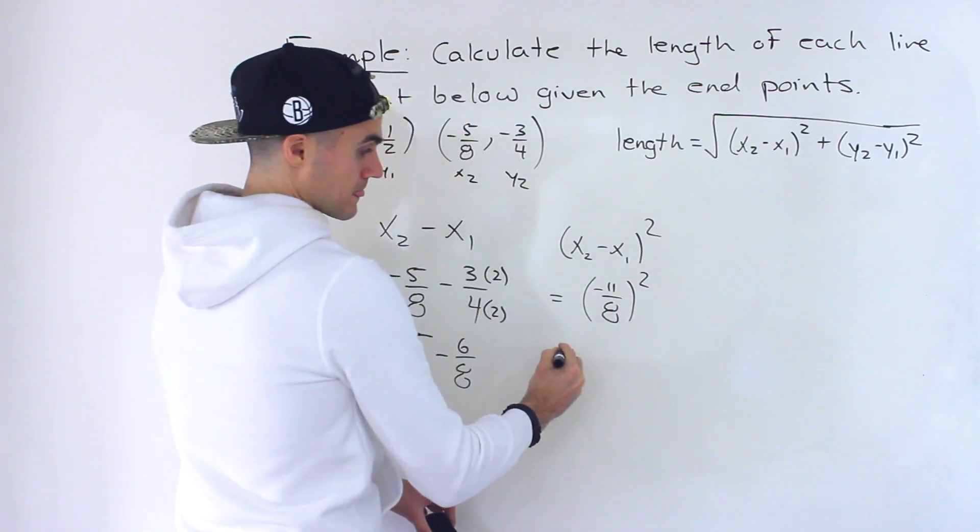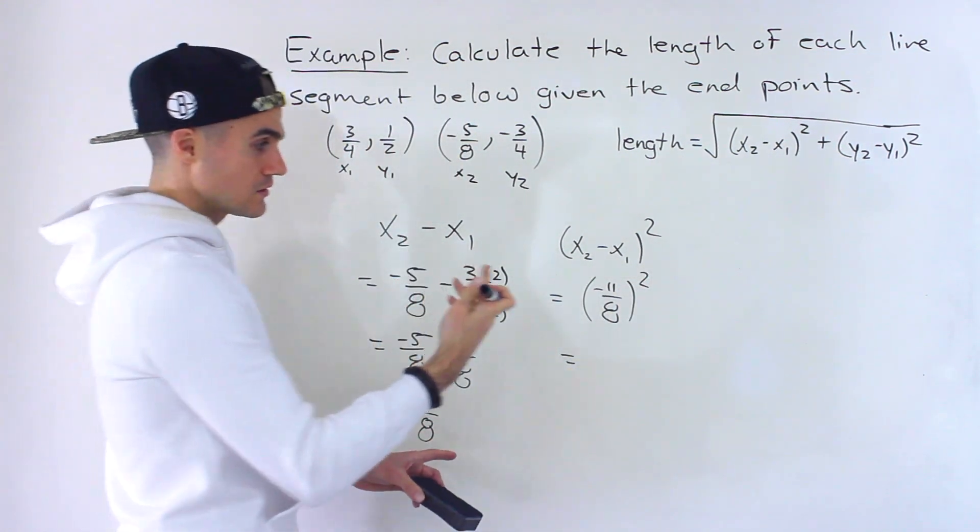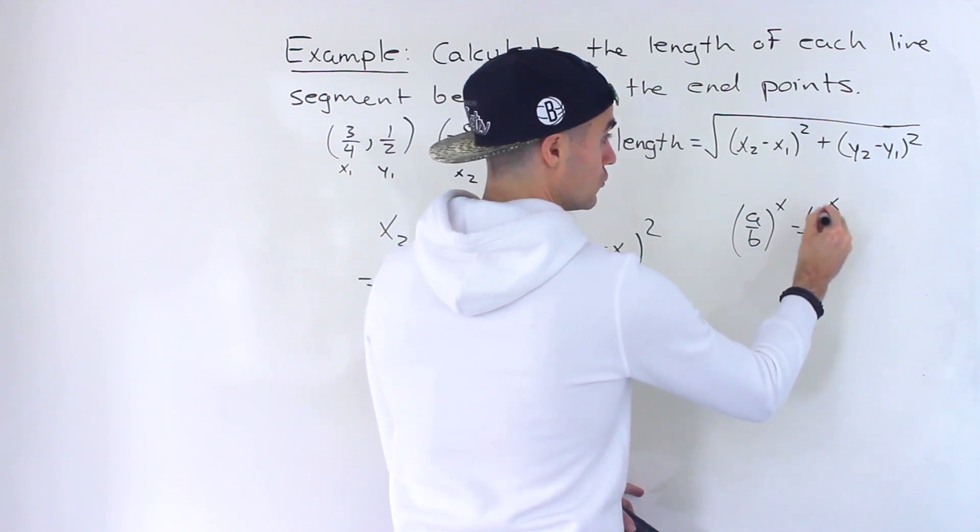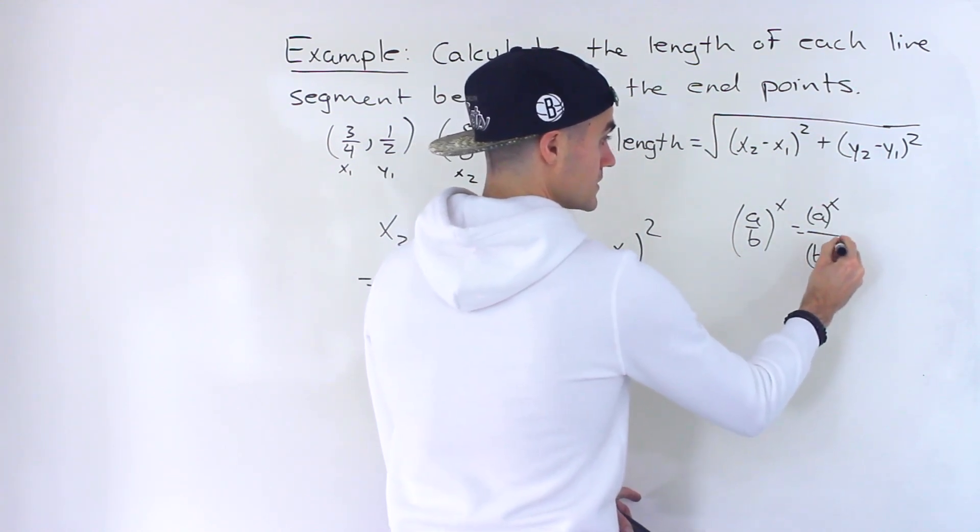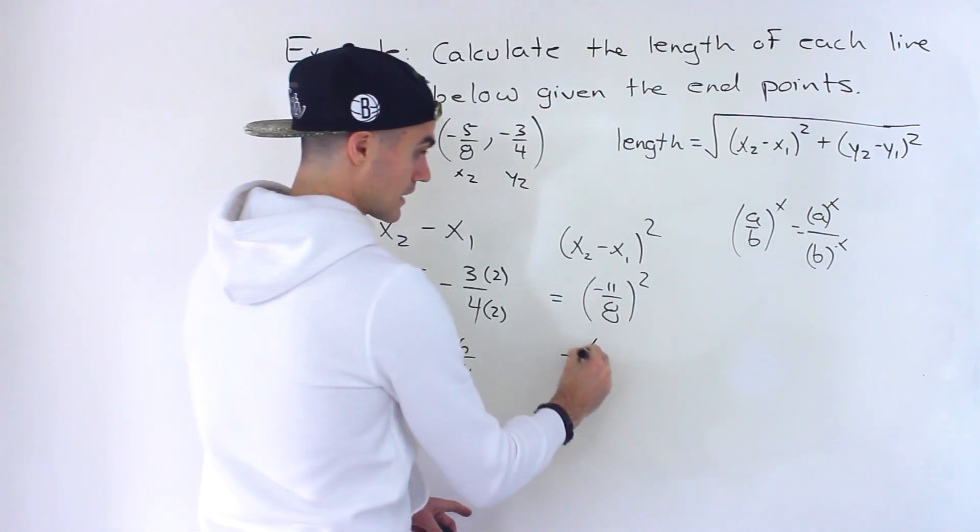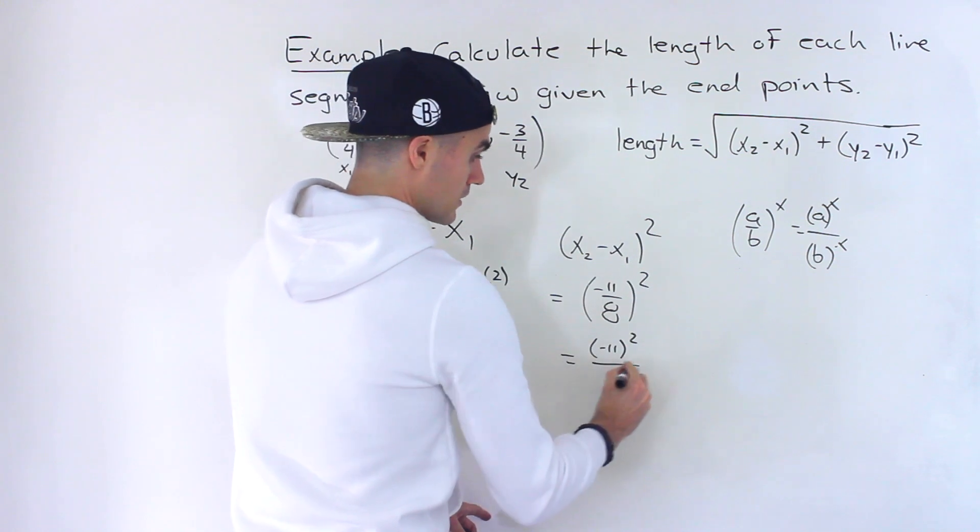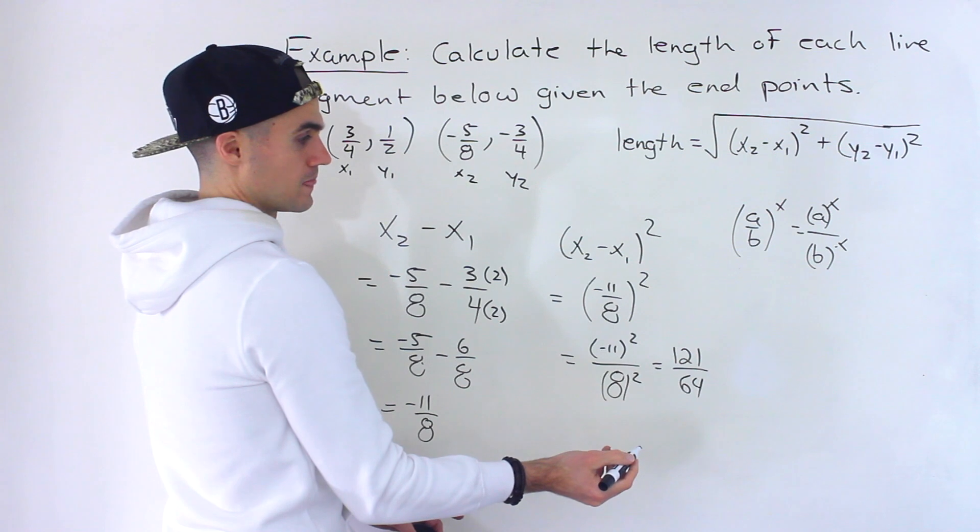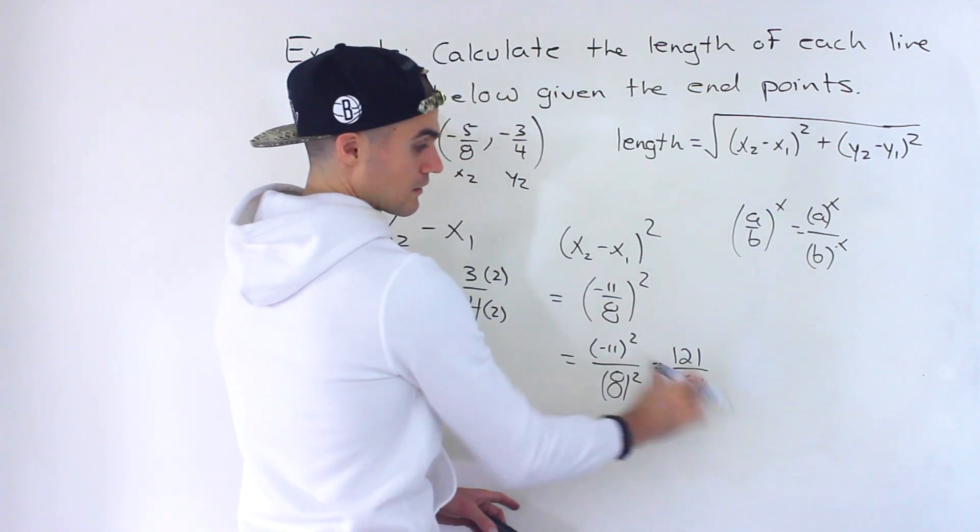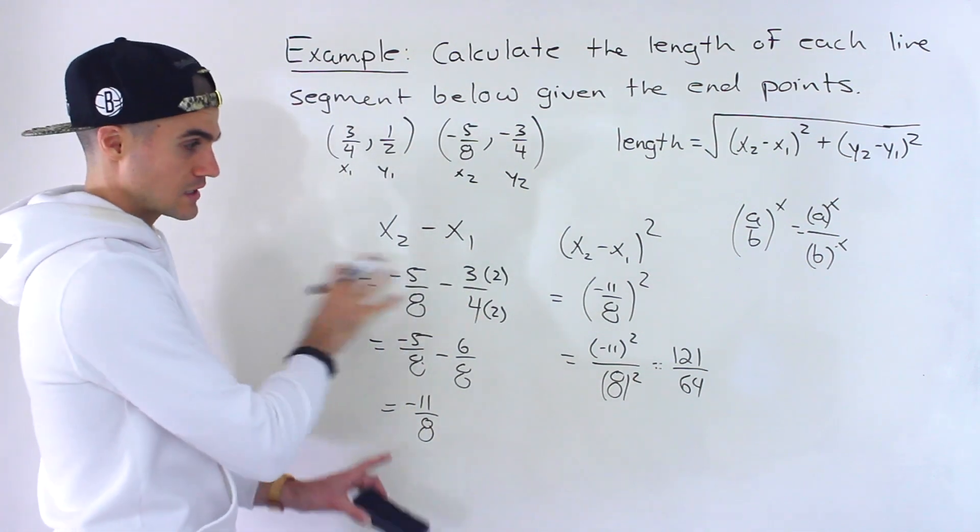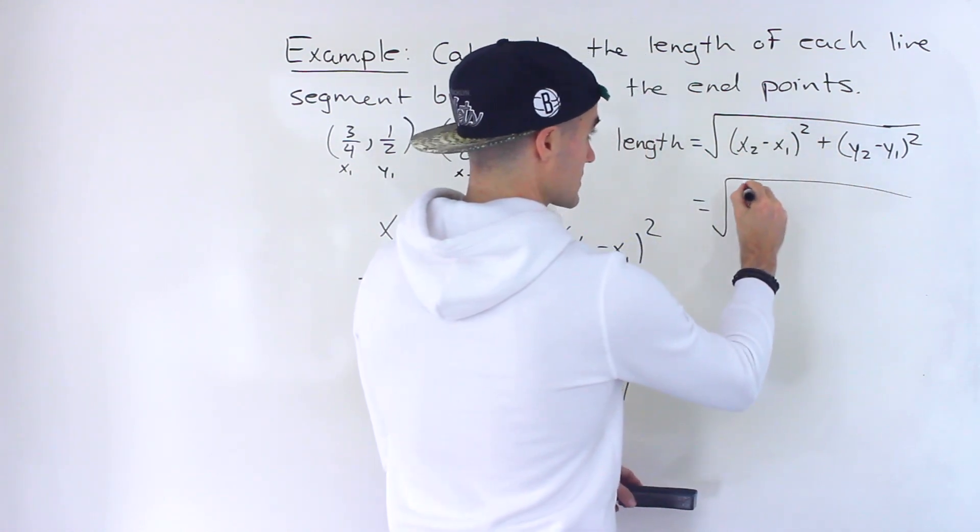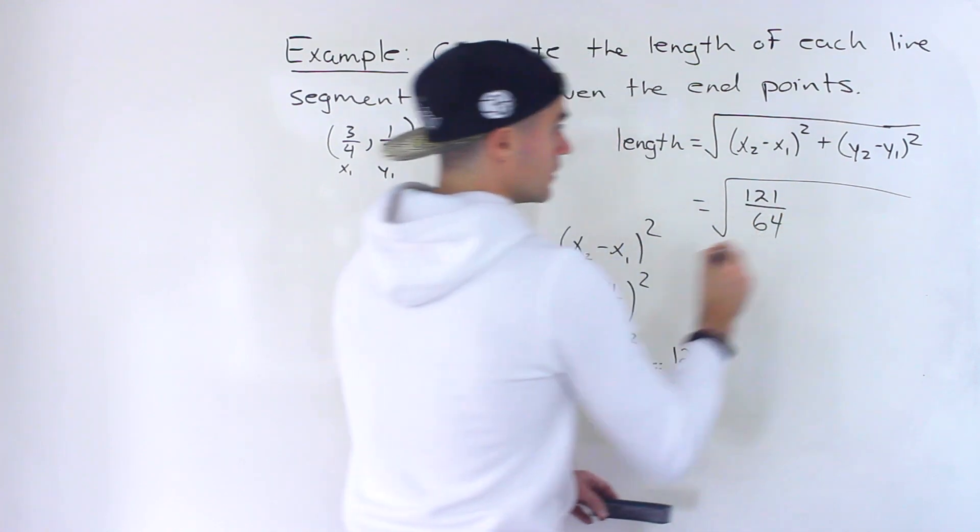Now if we square it, whenever we square a fraction, in general, if we have like a over b to the power of x, we could take the numerator to the power of x and the denominator to the power of x. That's an exponential rule right there. So we could take negative 11, square it, and then we could take 8 and square it, which would give us 121, positive 121 over 64. So this portion here would end up being that. So I suggest that when you're getting fractions like this, doing it in steps. So this whole thing ends up being 121 over 64.